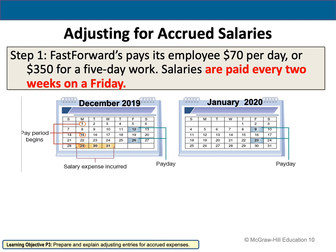Now we're going to see an example of adjusting for accrued salaries. The company pays their employees $70 per day, and employees work five days a week — Monday through Friday. So $70 multiplied by 5 means every week I pay them $350 in total. But salaries are paid every two weeks on a Friday. So in December 2019, the first salary payment is on the 12th of December, and then the next payment is on the 26th of December.